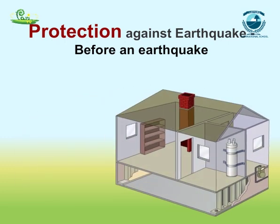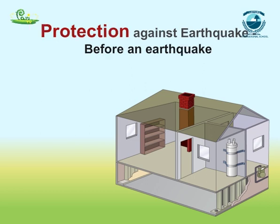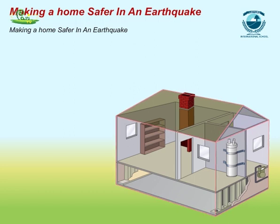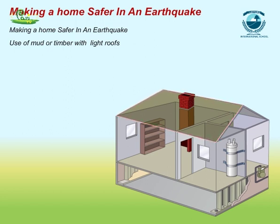Protection against earthquake — before an earthquake: modern building technology can make it possible to design buildings that can withstand major tremors. 1. It is advisable to make the structure simple so that it is quake-safe. 2. Use of mud or timber is better than heavy construction material, with roofs as light as possible, so that if the structure falls the damage will not be heavy.